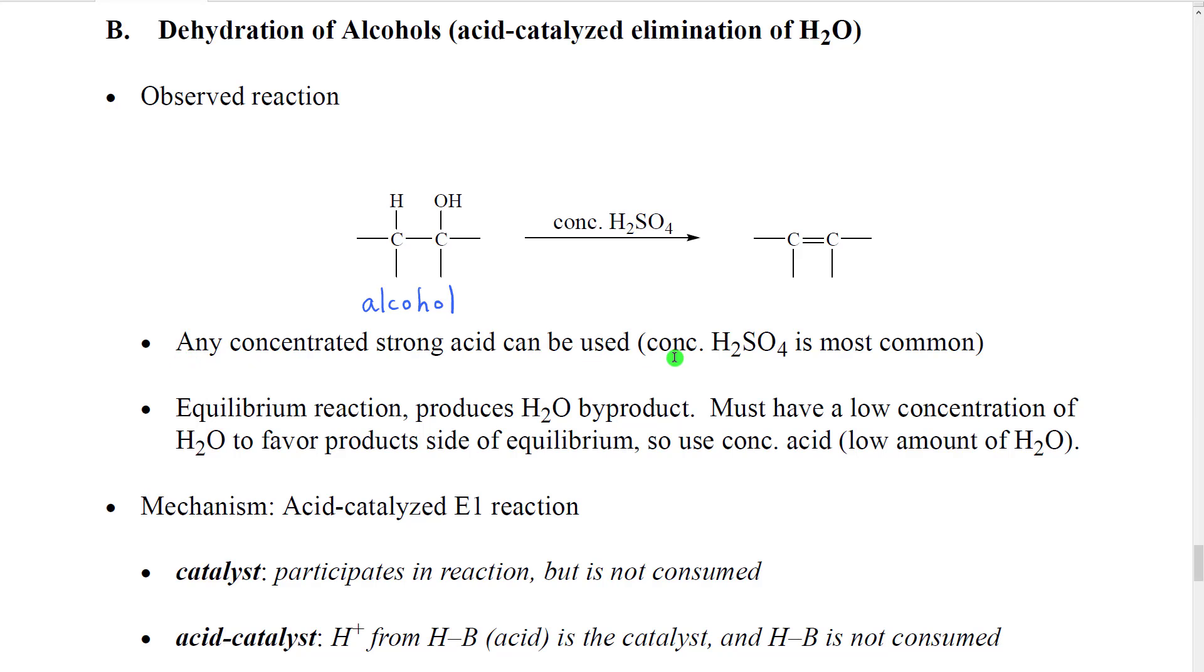So any strong acid can be used as our reagent for this, although concentrated sulfuric is probably the most common. While it's not written on the product side of the reaction, there is a molecule of water produced. It's a byproduct we normally ignore. However, it should be pointed out that this reaction is actually in equilibrium. If we have a high concentration of water, by Le Chatelier's principle, the reaction will begin to push toward the reactant side. So in order to favor production of the products, we use concentrated acid which is a lot of acid and only a little amount of water.